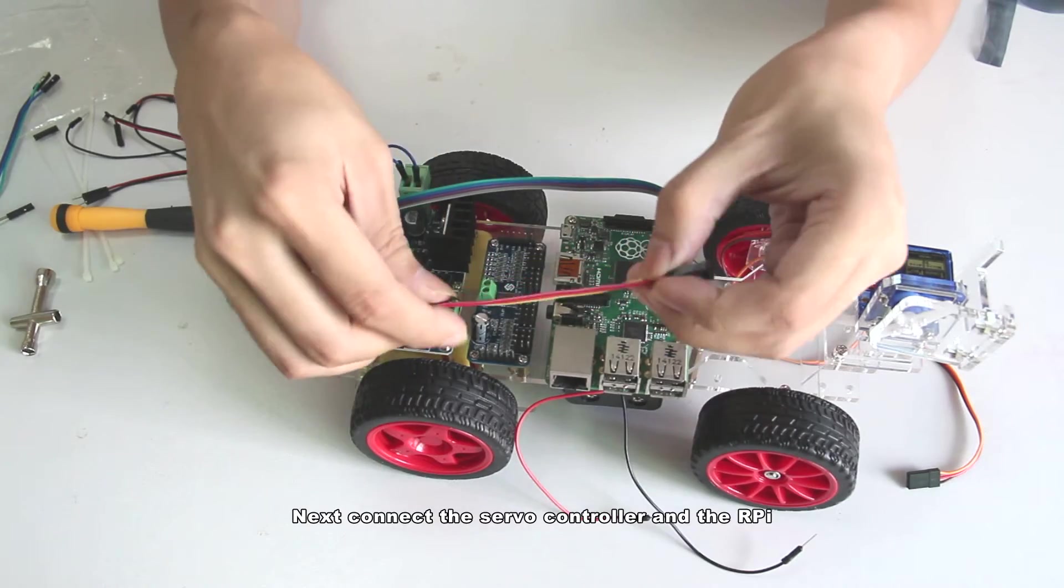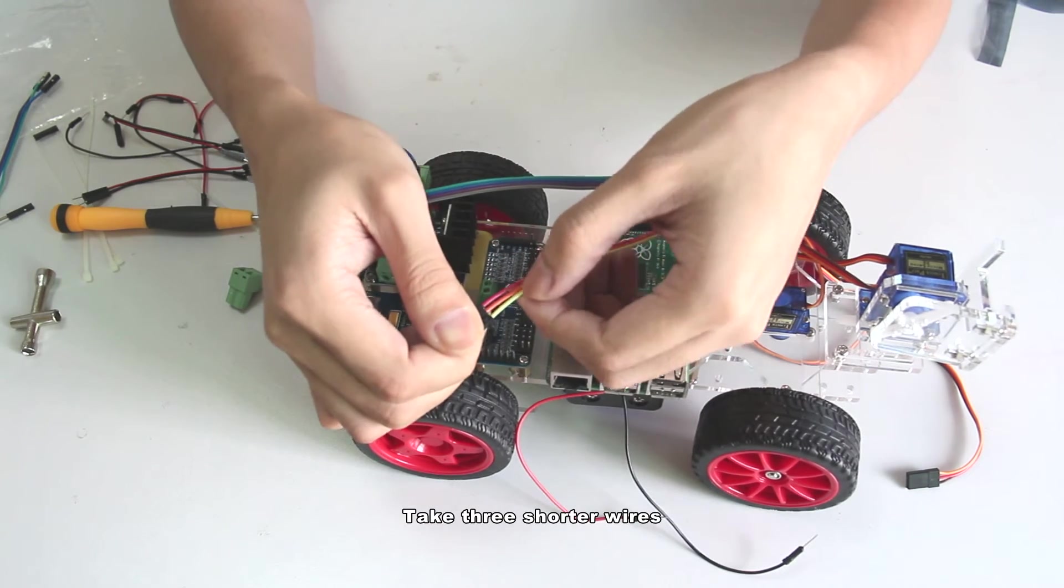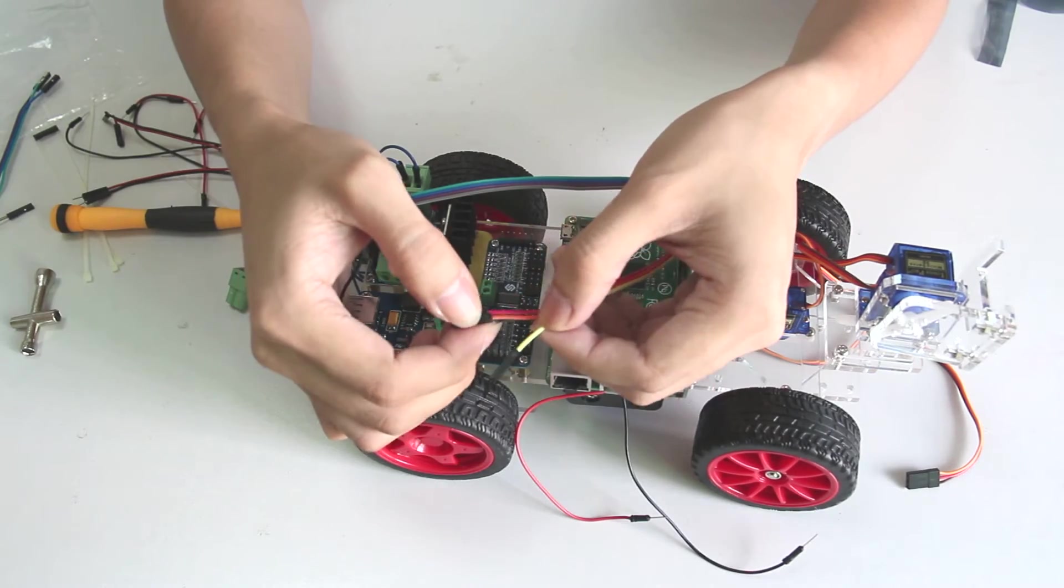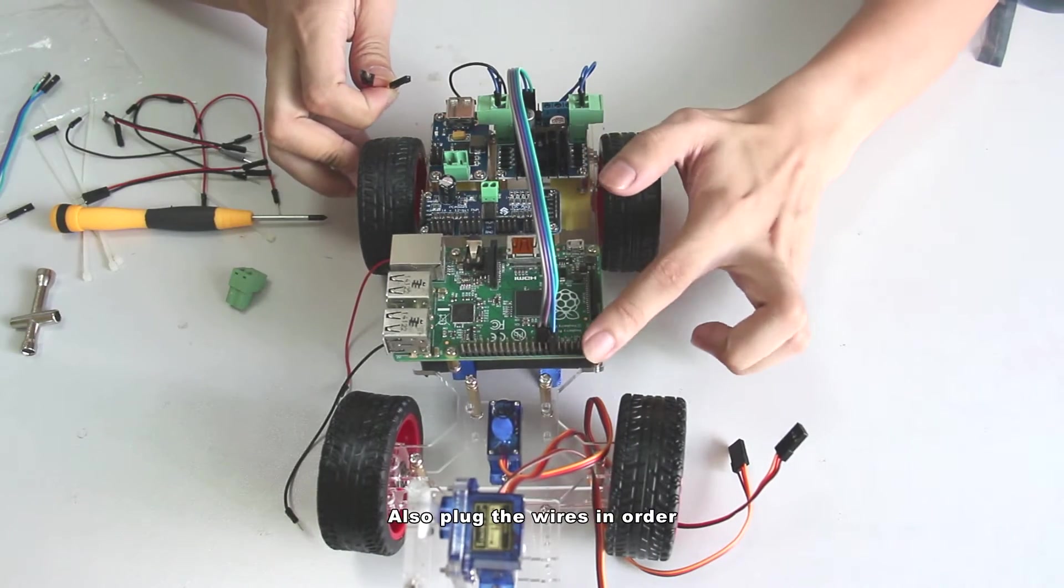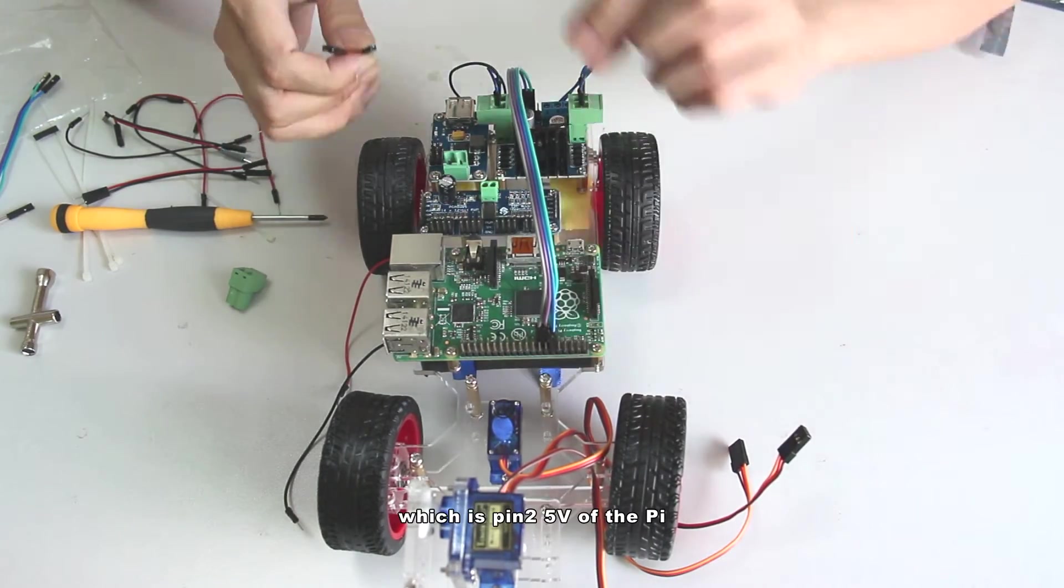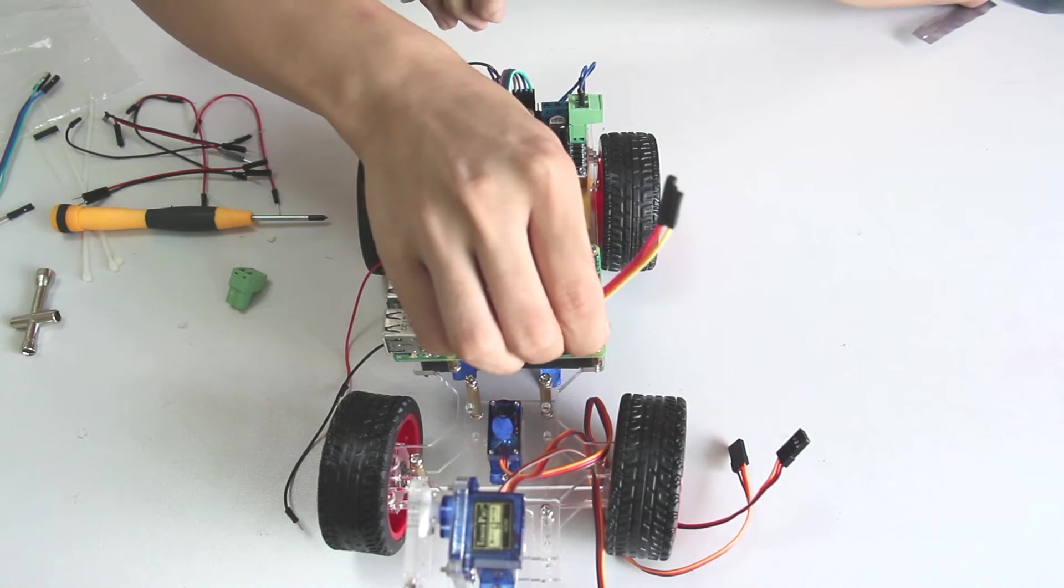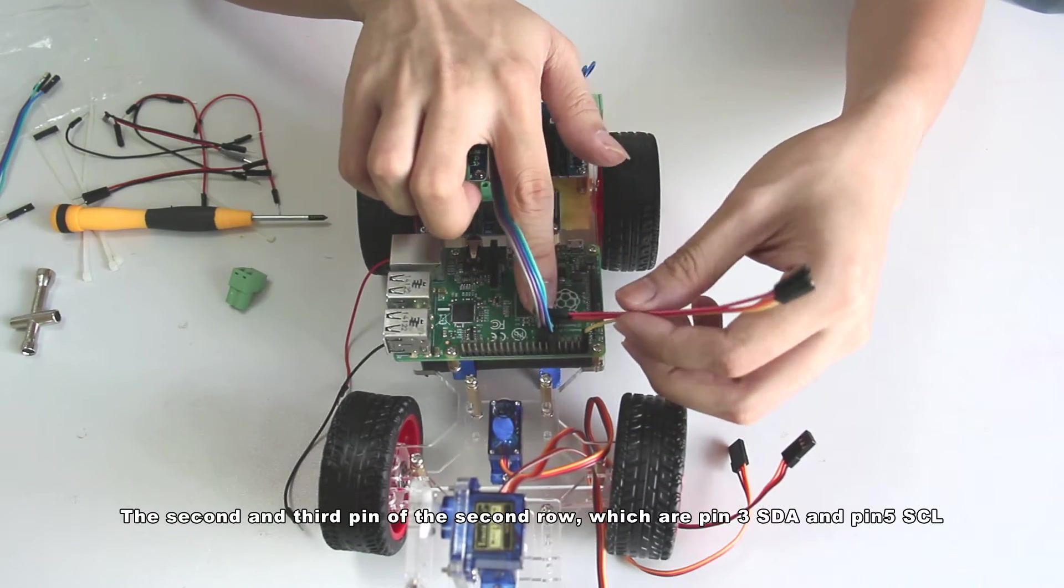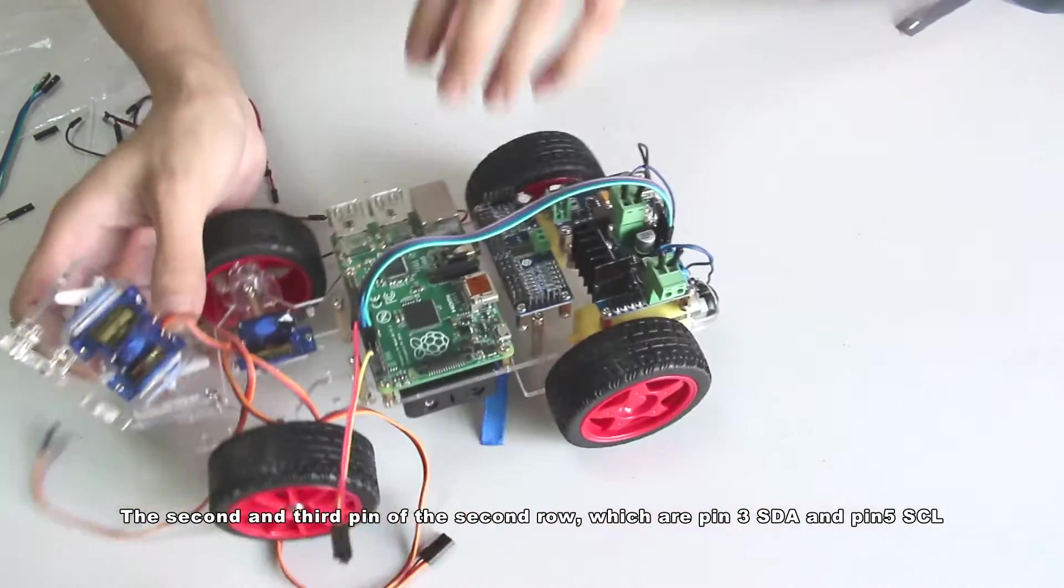Next connect the servo controller and the Raspberry Pi. Take 3 shorter wires. Also plug the wires in order into the 1st pin in the 1st row which is pin 2, 5 volts of the Pi. The 2nd and 3rd pin of the 2nd row which are pin 3 SDA and pin 5 SCL.